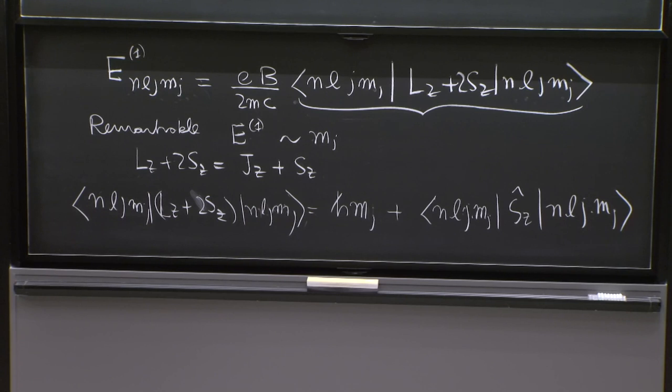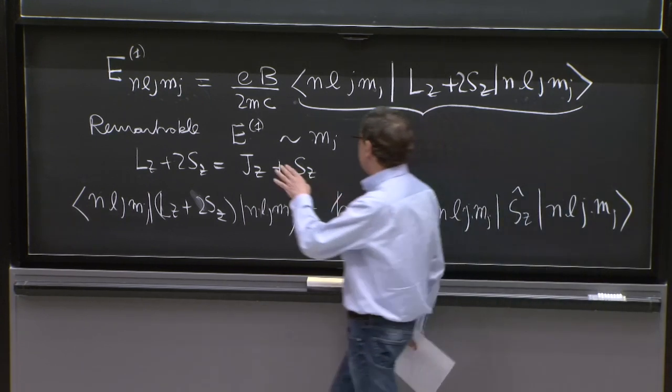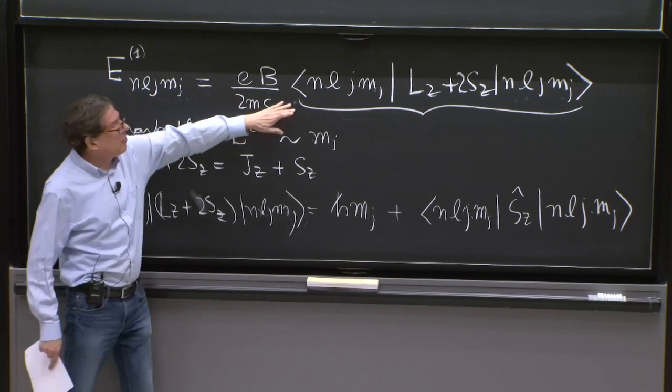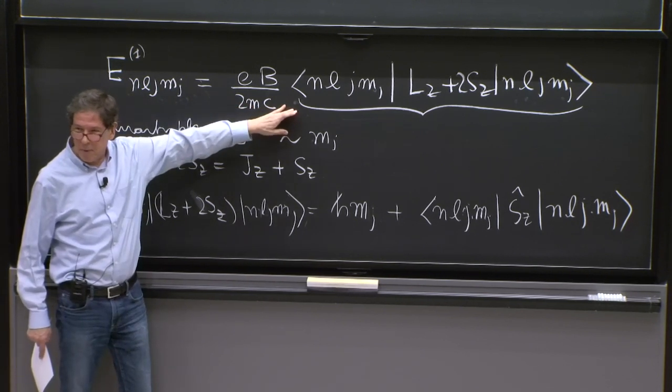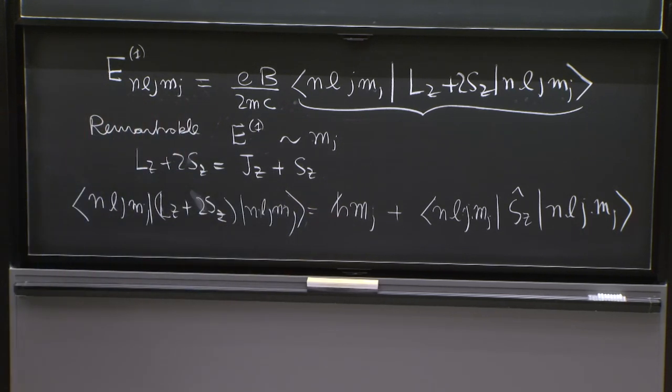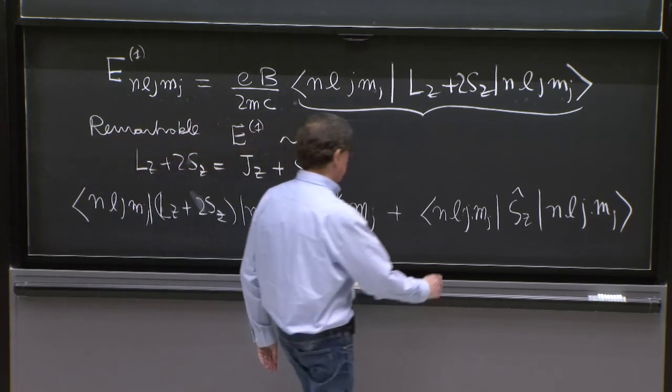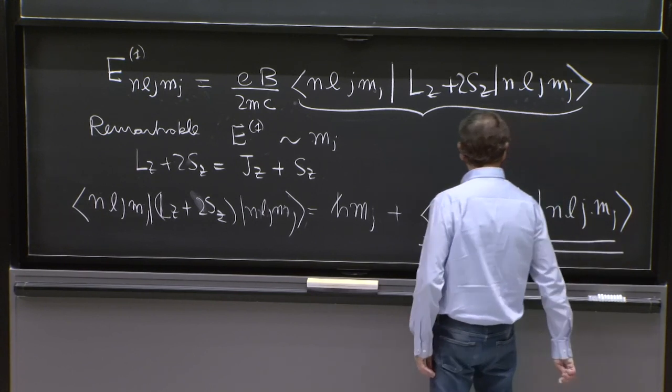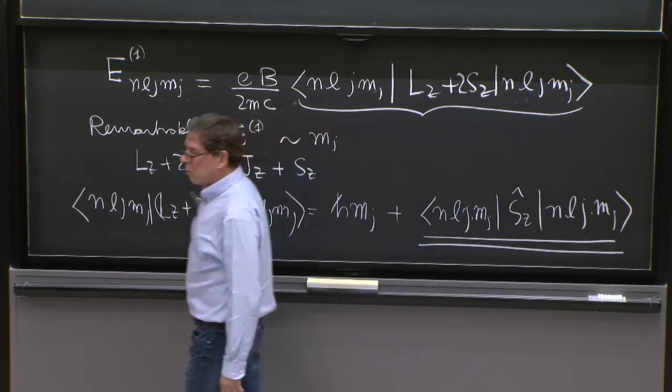So a little bit of the mystery maybe seems to you to at least consistent here. I said this matrix element turns out to be proportional to Mj. And certainly, this piece having to do with the J component here is proportional to Mj. The mystery that remains is why this matrix element would be proportional to Mj.